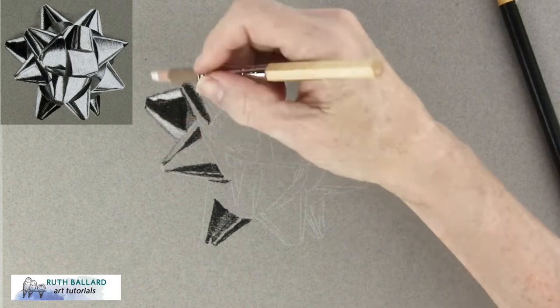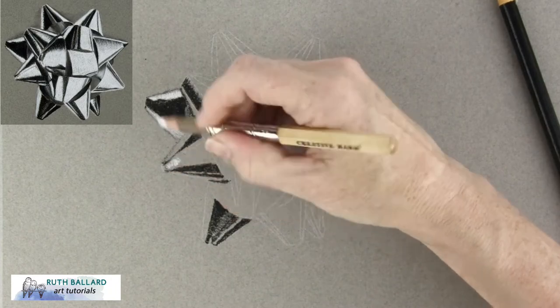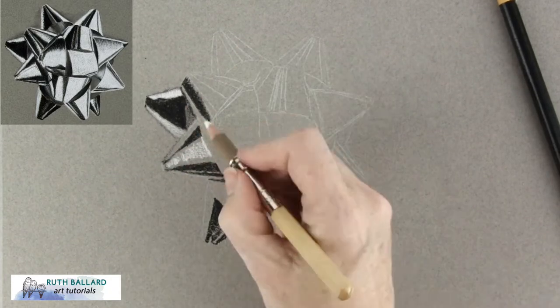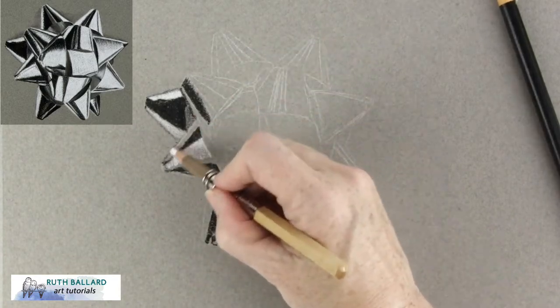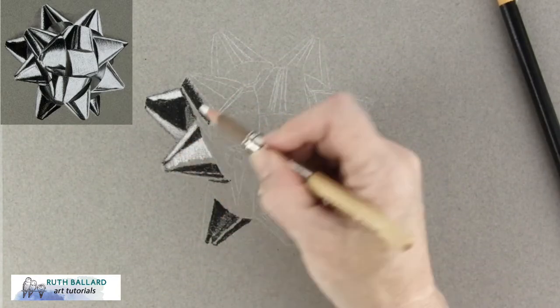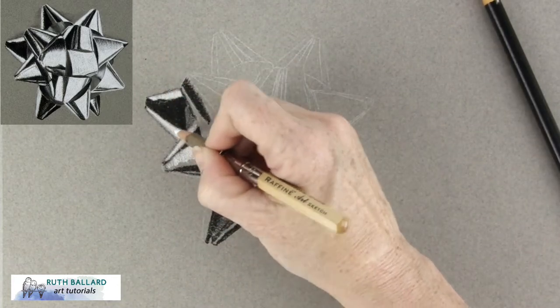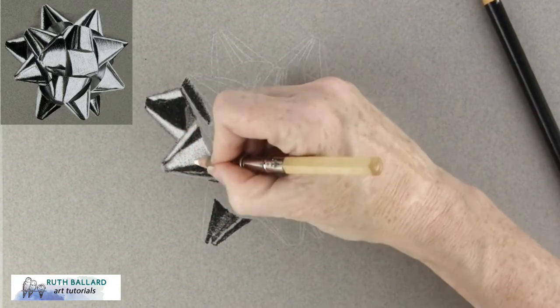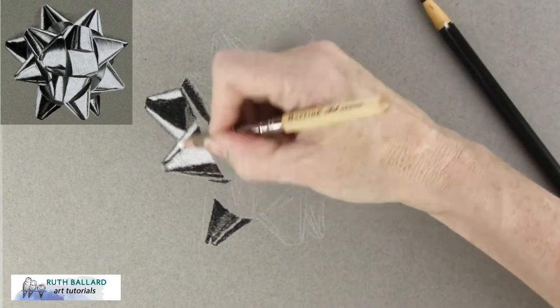Contrast is so important to make things look realistic but it's one of the things that people ignore. Contrast means having a range of values in your artwork, bright highlights and dark shadows and this is what makes your drawing pop. Without contrast your work will look flat and no amount of detail can make up for that so don't be afraid to get in those dark values.